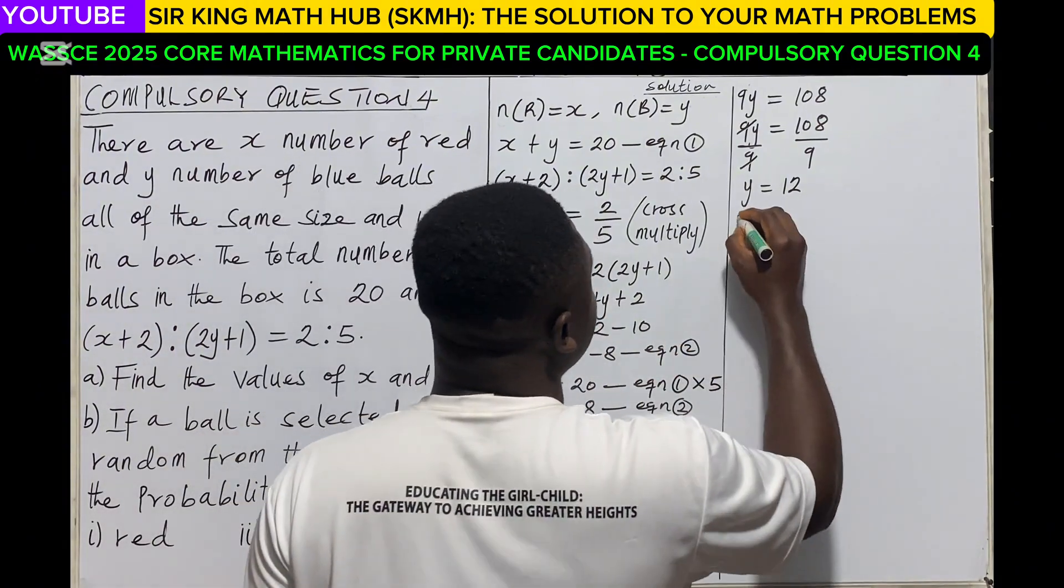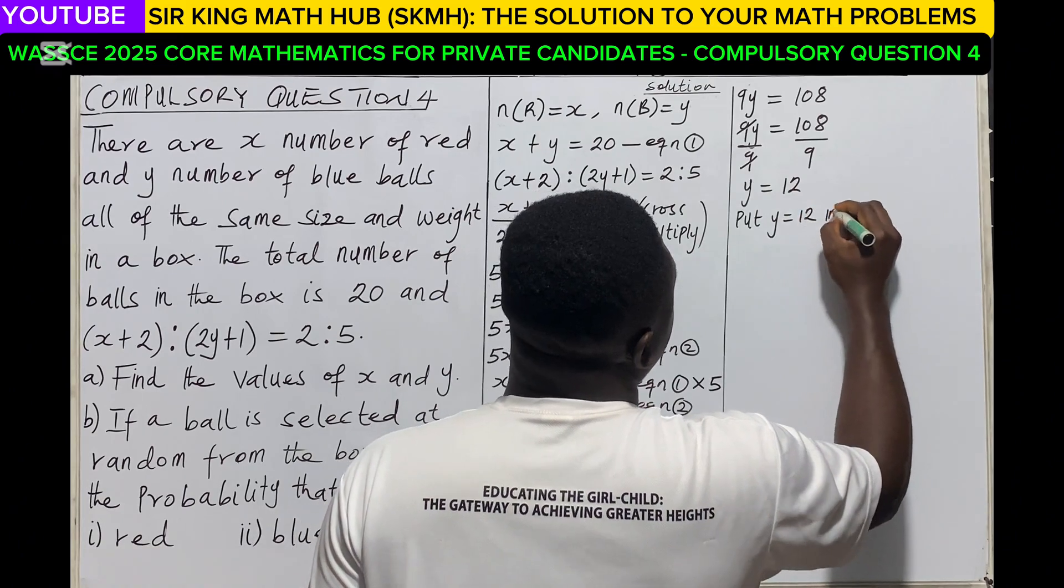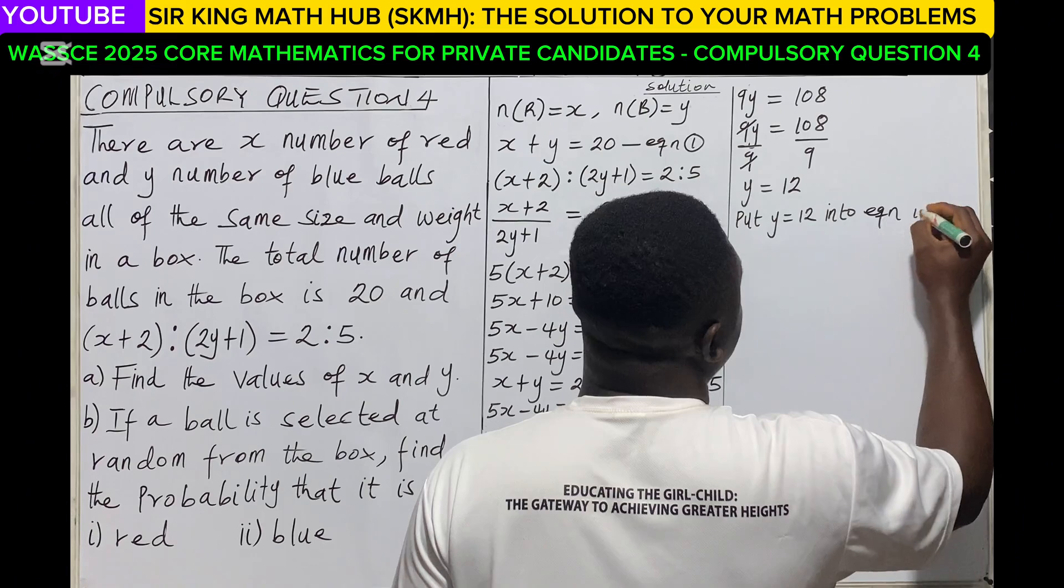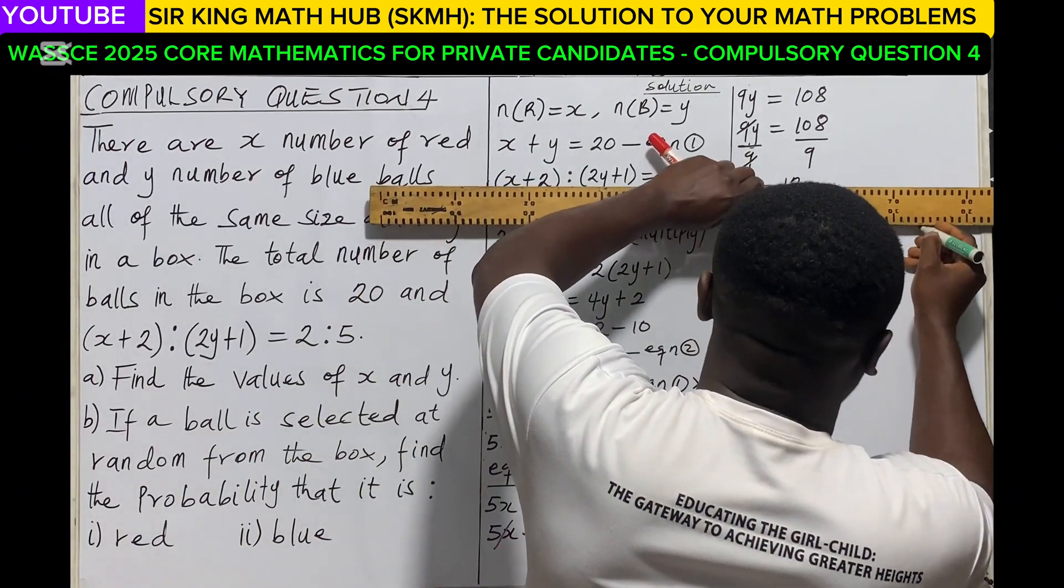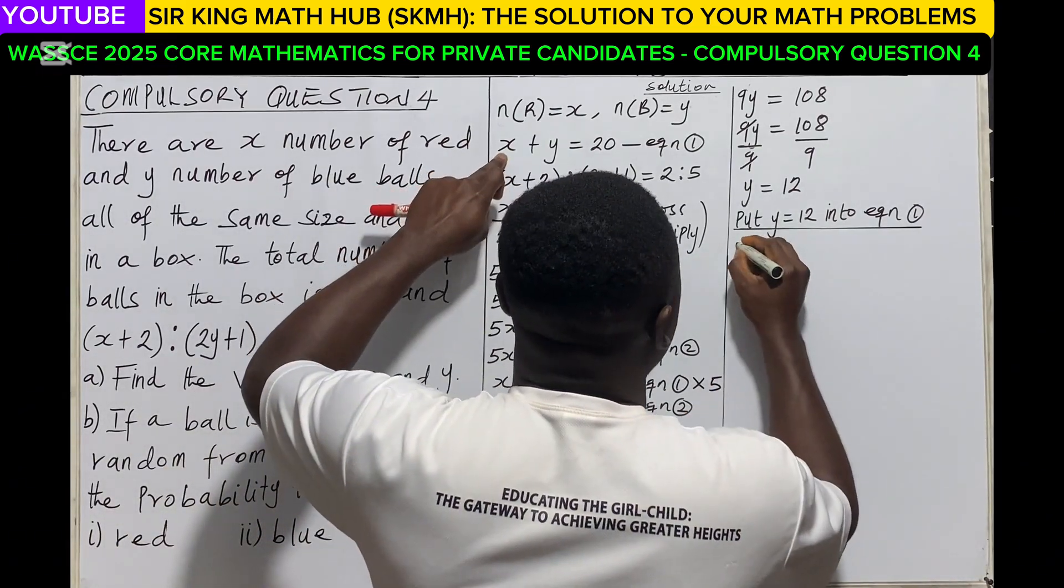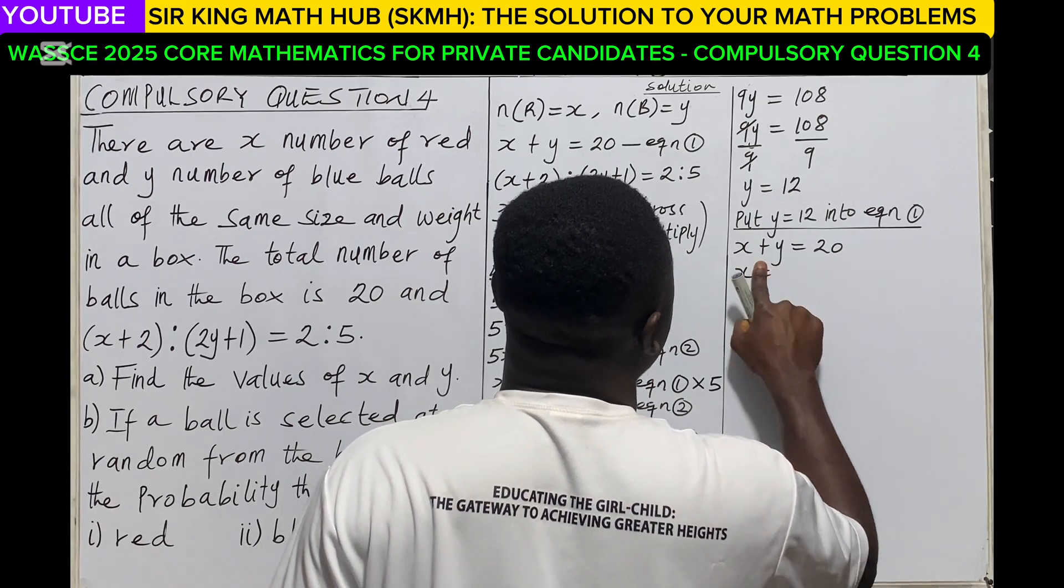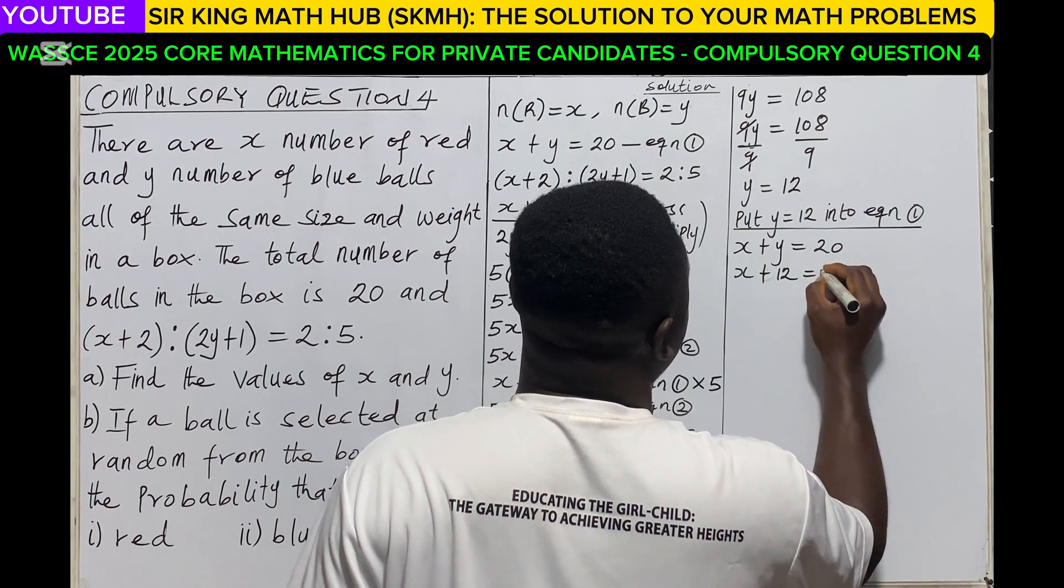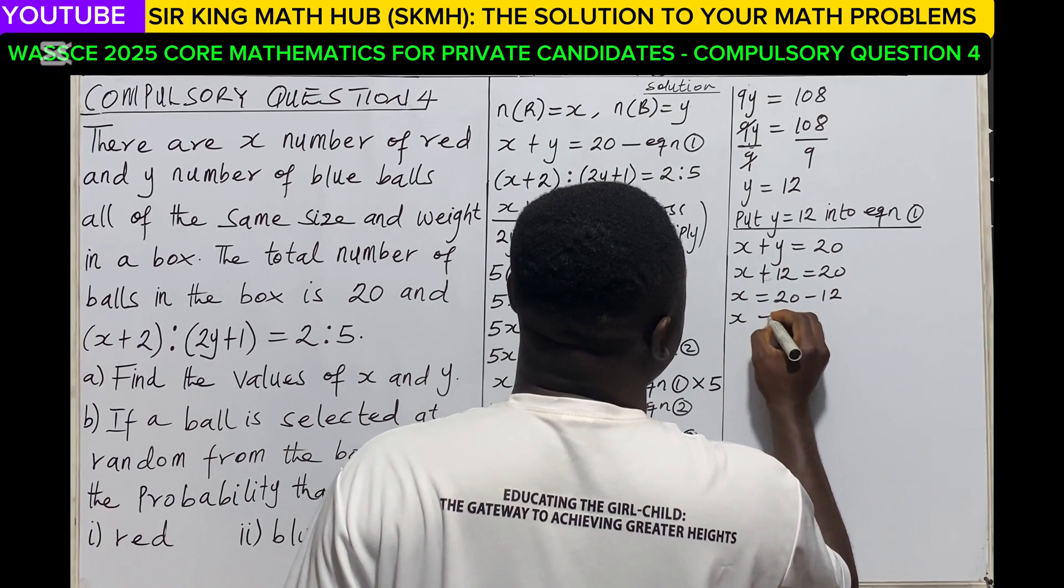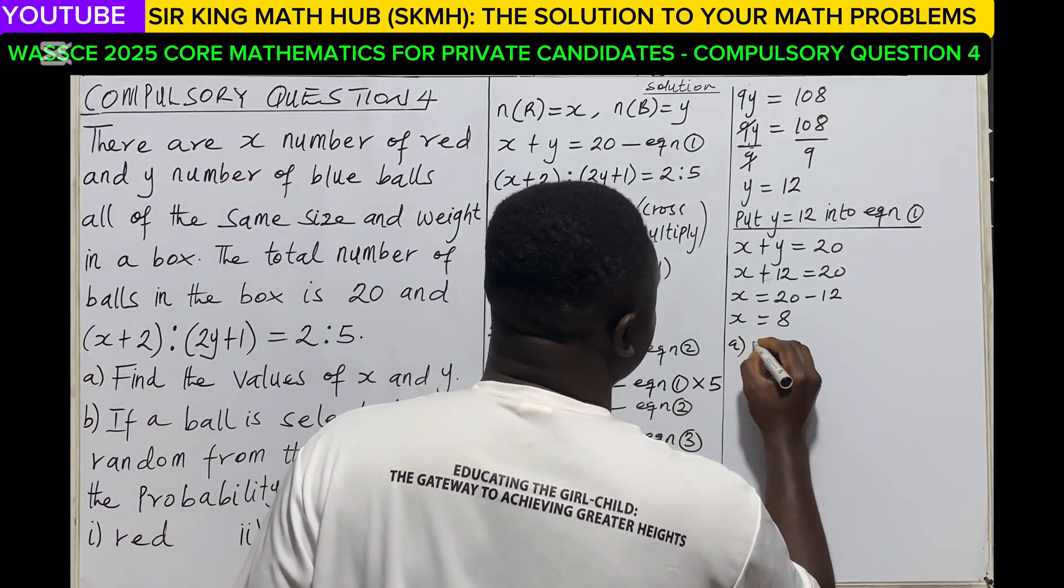We also need a value of x. So we substitute y is equal to 12 into any of the three equations. So I prefer equation 1. So equation 1, that is x plus y is equal to 20. But we know y is 12. So making x the subject, we have x is equal to 20 minus 12. So x is equal to 8. So for part A, x is equal to 8 and y is equal to 12.